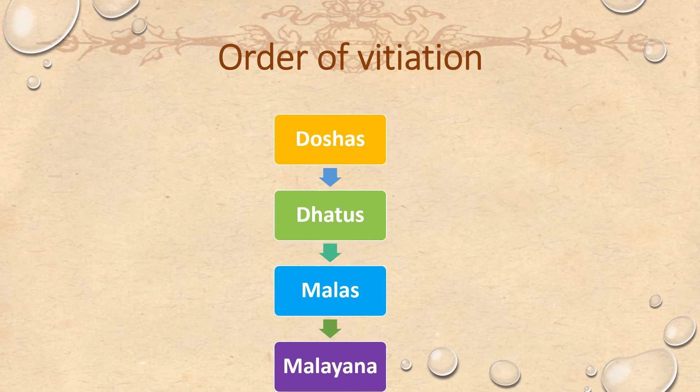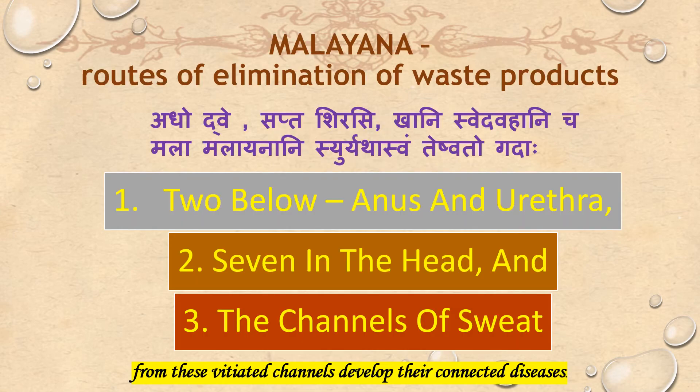Order of vitiation: Doshas vitiate Dhatu; Dhatus vitiate Mala; Mala vitiates Malayana — the roots of elimination of waste products. Adho Dve (two below: anus and urethra), Sapta Shirasi (seven in the head), and the channels of the sweat. From these vitiated channels develop their connected diseases.